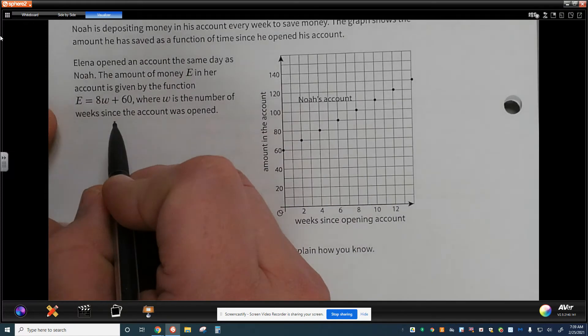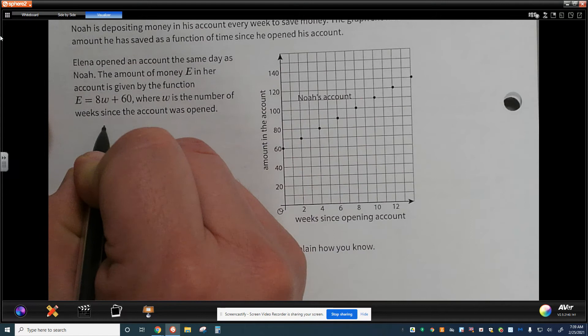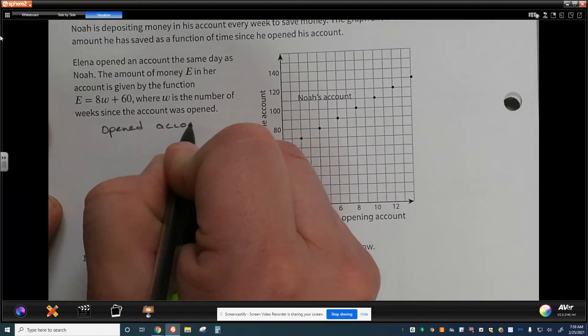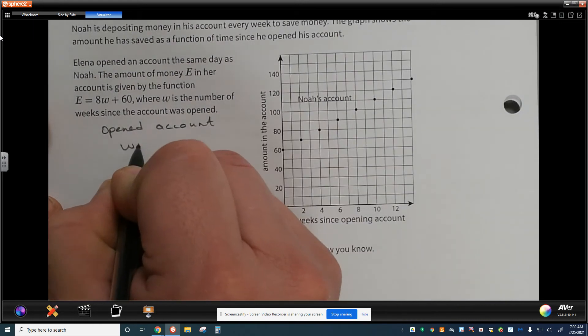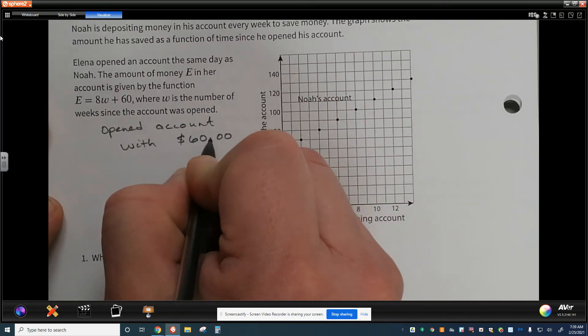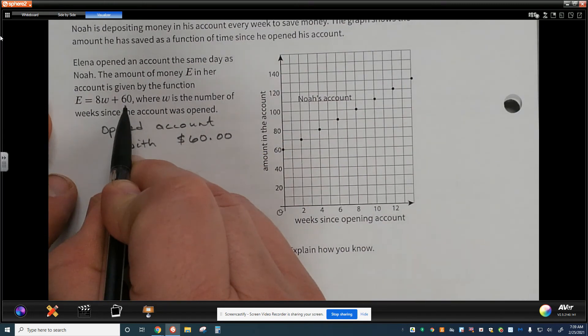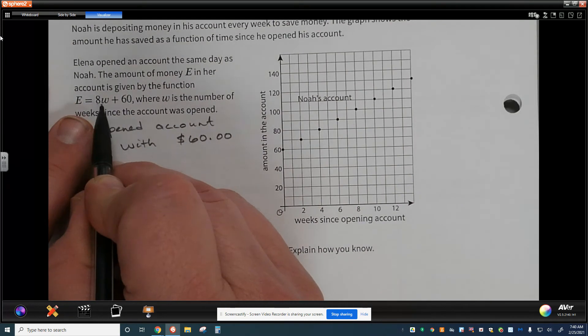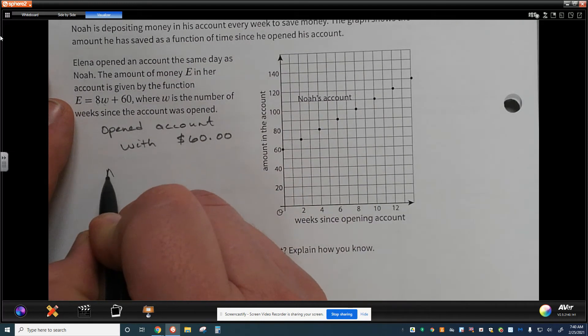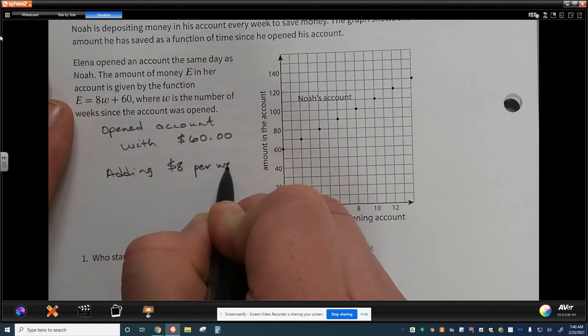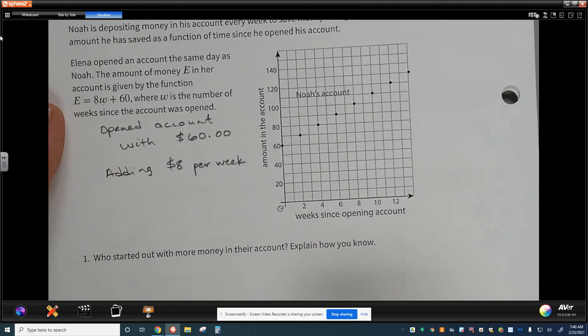Who started out with more money in their account and explain how you know? Well, let's talk about Elena. When she opened her account, she opened account or her account with $60. And the reason I know that is because the equation does not start at 0, 0. That makes this one not proportional. She saved 60, or she started with $60 and was adding $8 every single week based on what's given here.